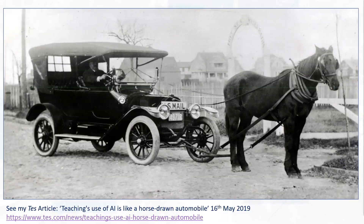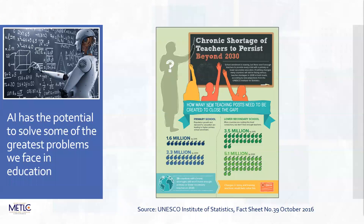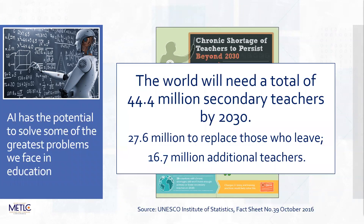The reason I think that is because we've got some really urgent problems within education, and I think AI has the potential to actually deal with a number of those in a very effective way. The first is that we're heading for a chronic teacher shortage globally - the figures are just overwhelming. We need 44.4 million more secondary school teachers by 2030, partly replacement and partly growth in the sector.